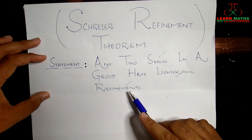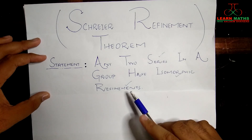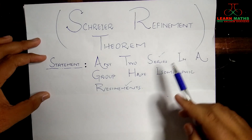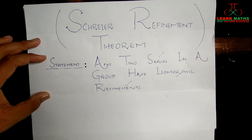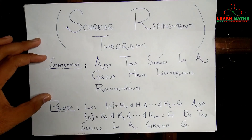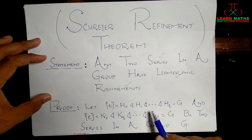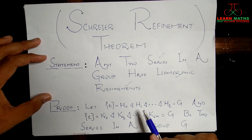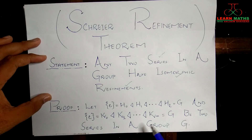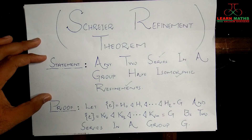Finally, the word refinement: a refinement of a series contains all the terms of the original series and may contain extra terms as well. We start by assuming two different series for a group G — the first series consists of subgroups H_i, and the second series consists of subgroups K_j. These are our two original series.